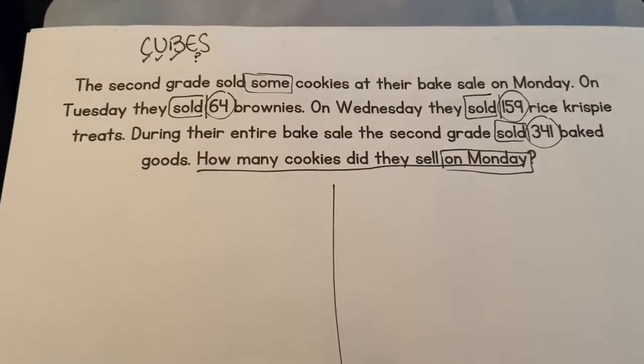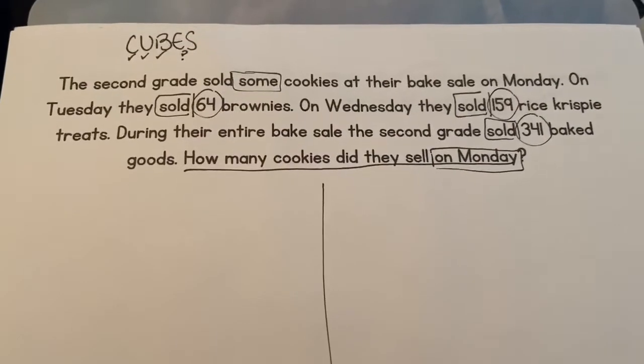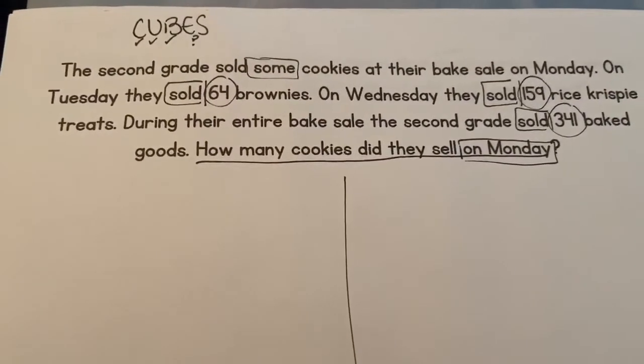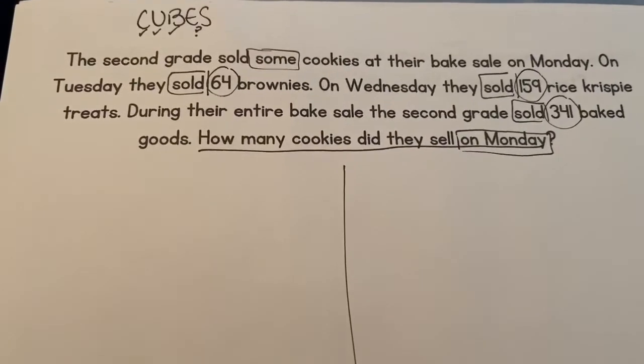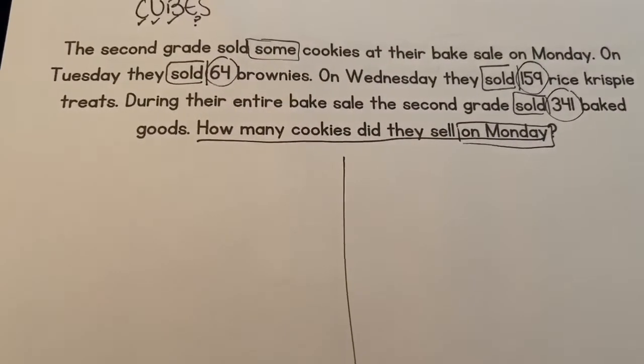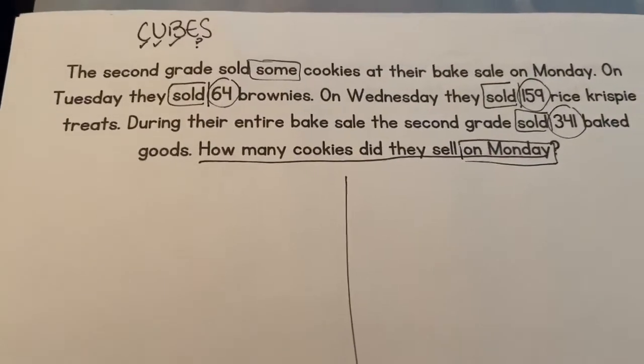It says the second grade sold some cookies at their bake sale on Monday. On Tuesday, they sold 64 brownies. On Wednesday, they sold 159 Rice Krispie treats. During their entire bake sale, the second grade sold 341 baked goods. How many cookies did they sell on Monday?